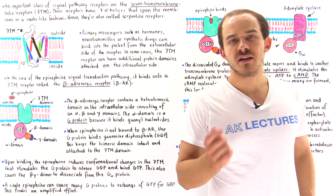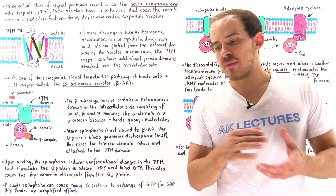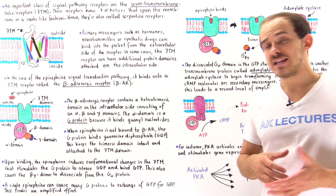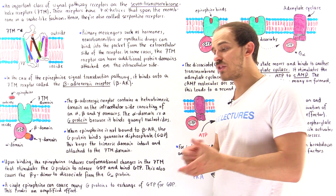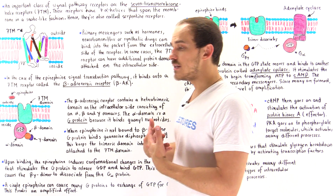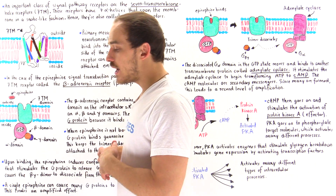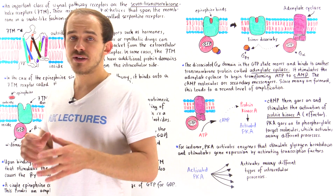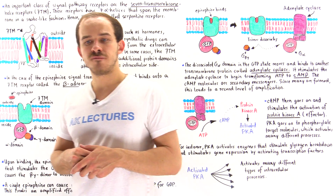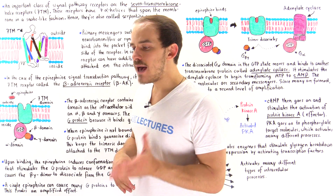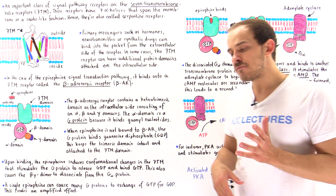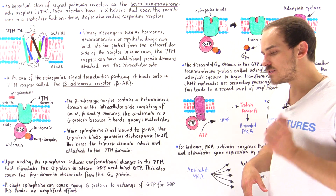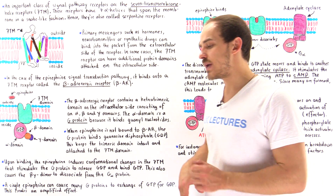Now that we know what a signal transduction pathway is, let's take a look at an example that takes place inside our body. In this lecture, we're going to focus on epinephrine signaling — the epinephrine signal transduction pathway.